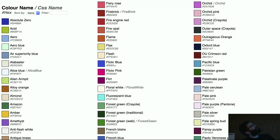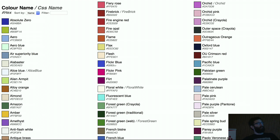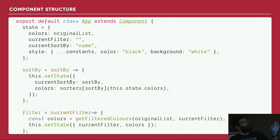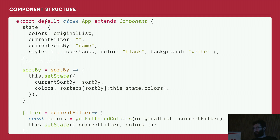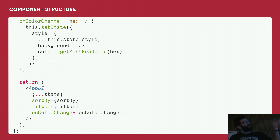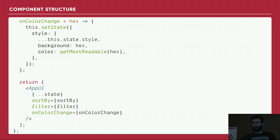This is an arbitrary list Wikipedia put together with all the colors that apparently have a name. I scraped the website and came up with a simple app where all the colors are listed. When you click on a color, there's a check on whether the text should be black or white, and the background changes to that color. I have a sort-by, filters so you can search for specific colors, and a color change that triggers the background update.